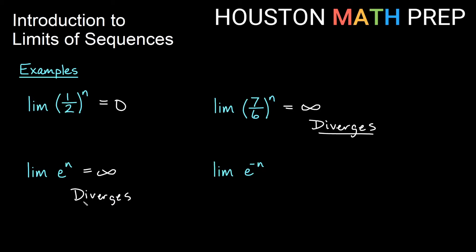The limit of e to the negative n is what you would think of as exponential decay. Another way to think of this is as the limit of 1 over e to the n. We get exponential growth on the bottom of the fraction — an infinite amount on the bottom as n gets larger — and so this limit is 0. We say that this converges to 0.